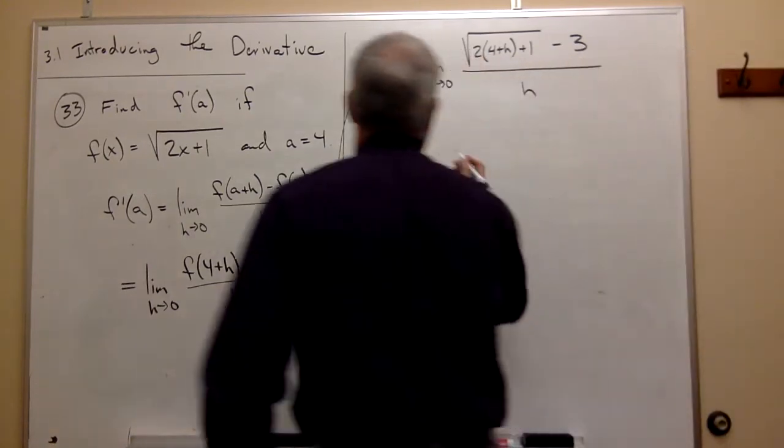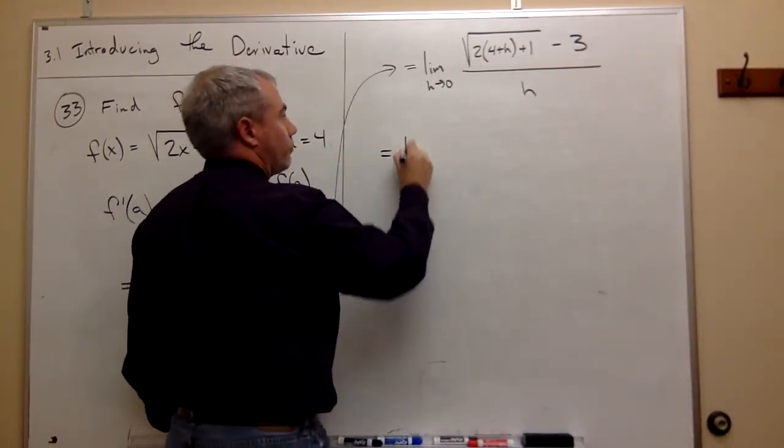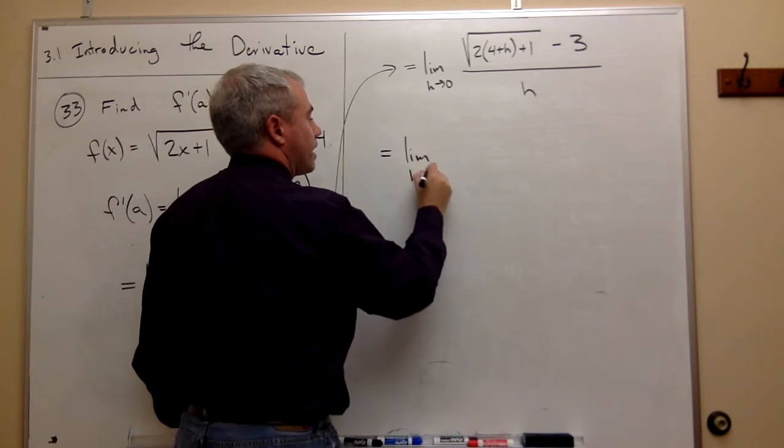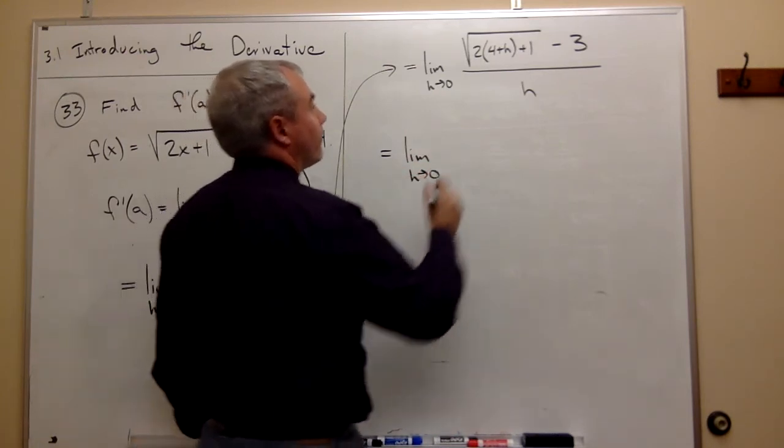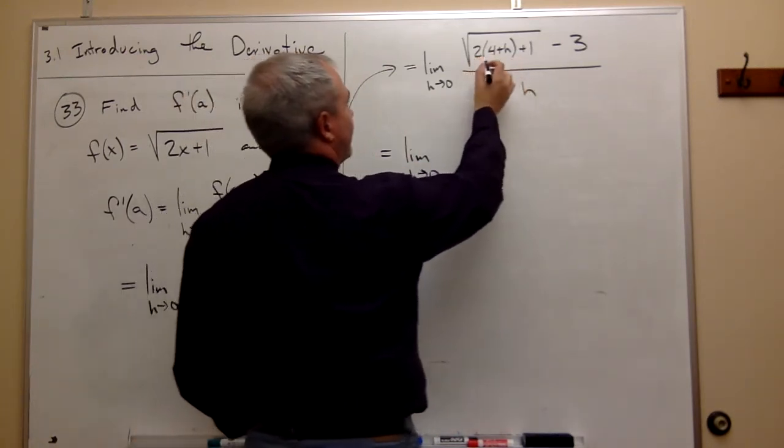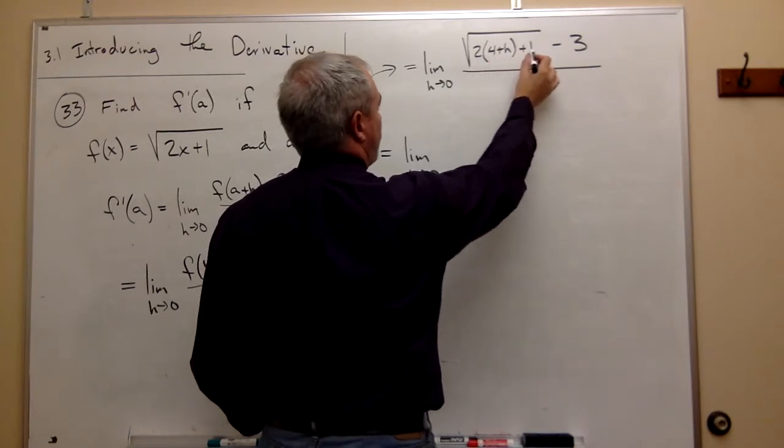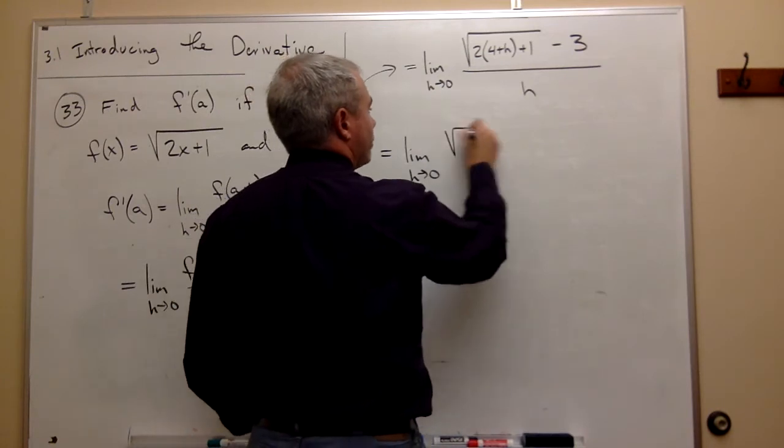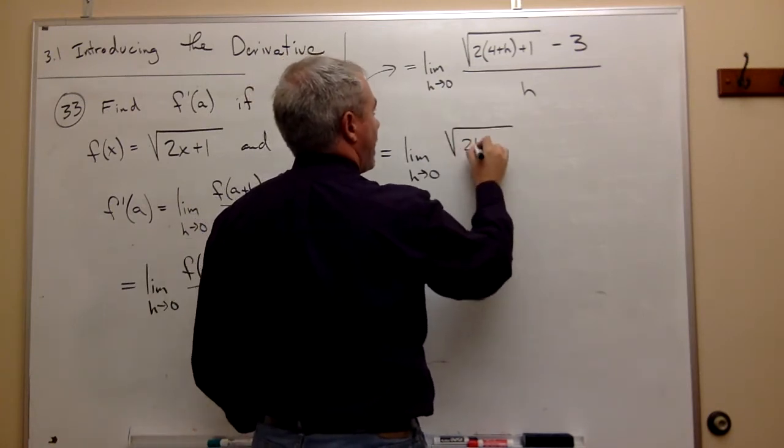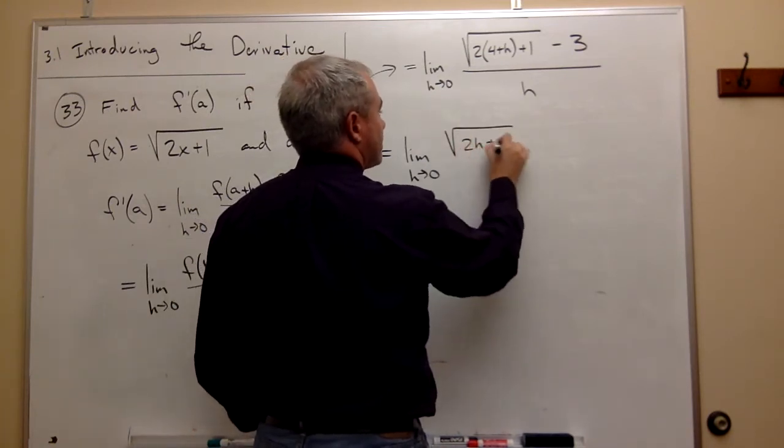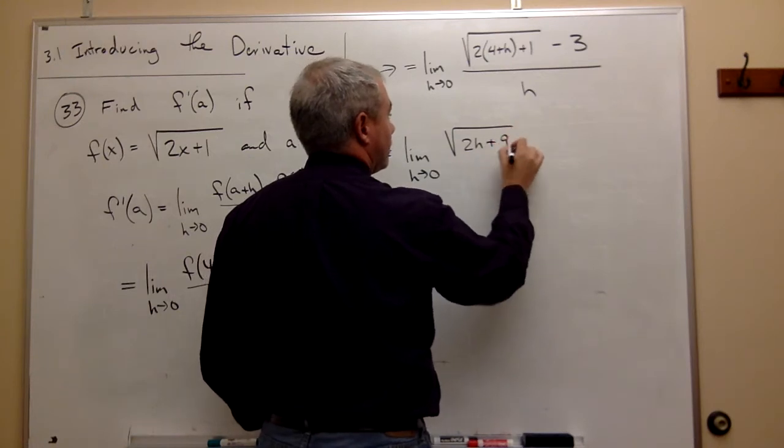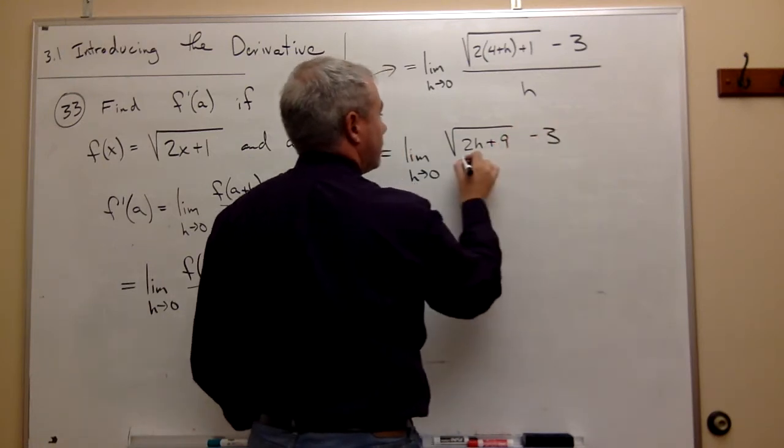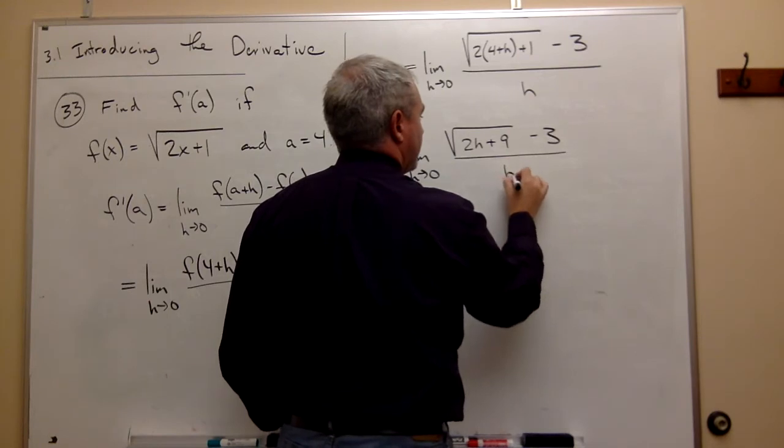I could rewrite this really quick to make it a little more clean. This is the limit as h goes to 0 of, if I multiply this out, let's see what I get. I get 2 times 4 is 8 plus 1 is 9 and 2 times h. So I get the square root of 2h plus 9 minus 3 divided by h.